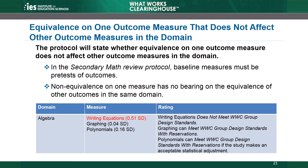Other review protocols may have unique requirements. For example, the science review protocol allows equivalence to be demonstrated using a math, reading, or literacy measure if a science pretest isn't available. And the student behavior review protocol requires equivalence for a behavior measure, no matter what the other outcome measures are.